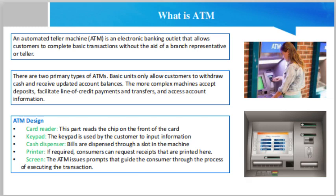Cash dispenser: bills are dispensed through a slot in the machine, which is connected to a safe at the bottom of the machine. Printer: if required, consumers can request receipts printed here; the receipt records the type of transaction, the amount, and the account balance. Screen: the ATM issues prompts that guide the consumer through executing the transaction; account information and balances are also displayed on the screen.